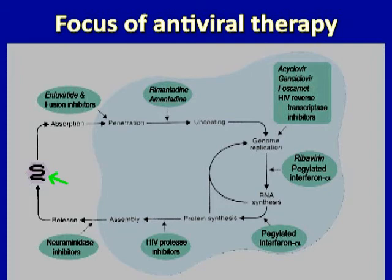This slide shows a schematic of a generalized viral life cycle, beginning with absorption and penetration of the cell and ending with the assembly and release of the virus. At each step in the process of producing new viruses, some of the existing antiviral drugs available to block that step are shown. These antiviral drugs are active against various viruses — some against HIV, some against herpes viruses, some against influenza, and some against hepatitis viruses — and the step in replication that they individually inhibit is specific in each case.